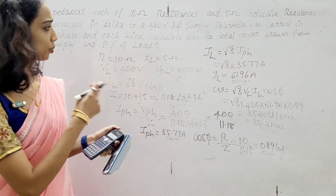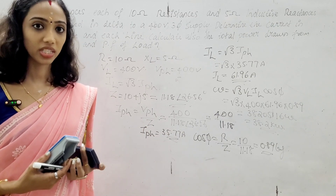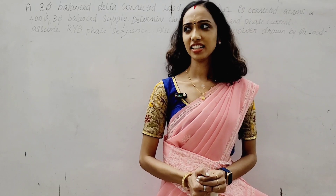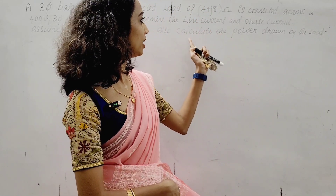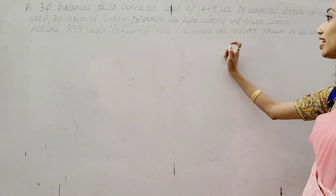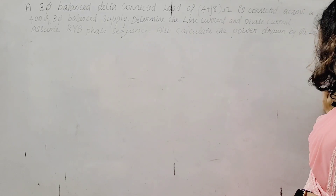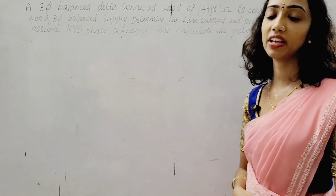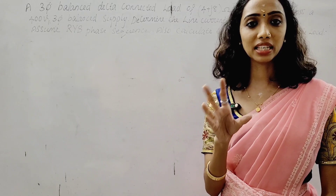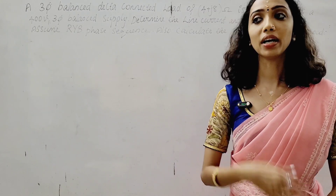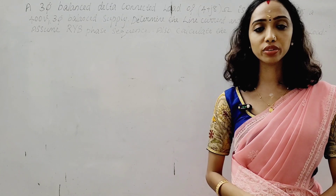Next example: find line current, phase current, and total power. Determine the line current and phase current and calculate the power drawn by the load. Assume RYB phase sequence. This is a delta connection with three phases R, Y, B. Phase connection means two phases connected, and with RYB we have three phases: R, Y, B.